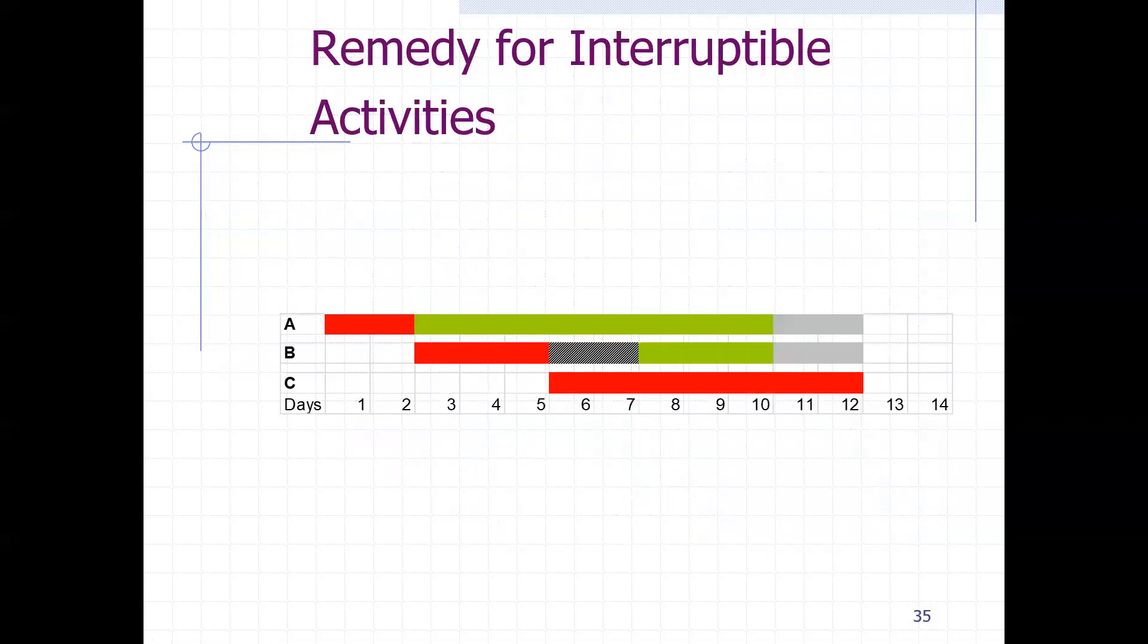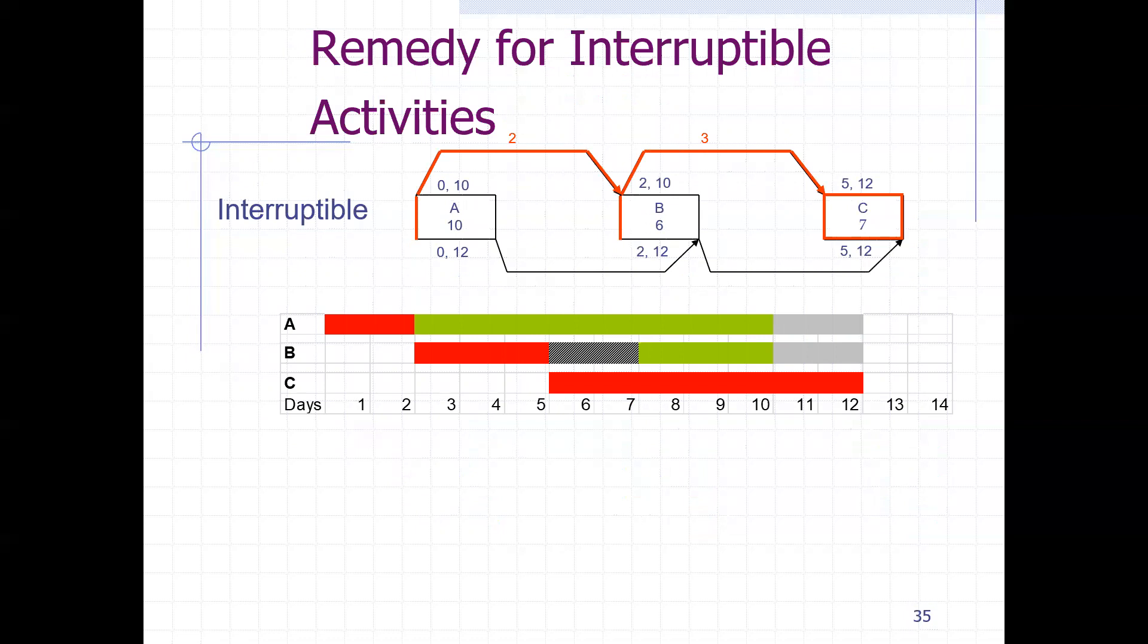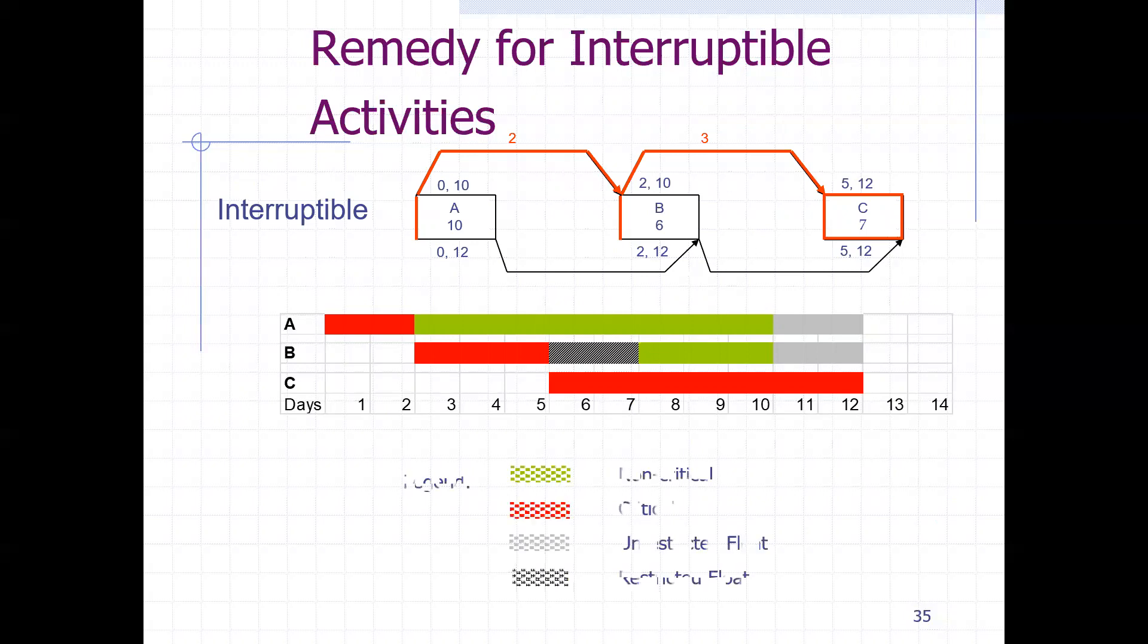So then what's the remedy? There are remedies actually for each one of them. So for the interruptible activities, we have two approaches to go by. The first one is to stretch the activities that have restricted float until they fill the restricted duration. In other words, it's eliminating the restricted floats. So you can have, for instance, A, it must start here with a duration of 10, and the rest is flexible.